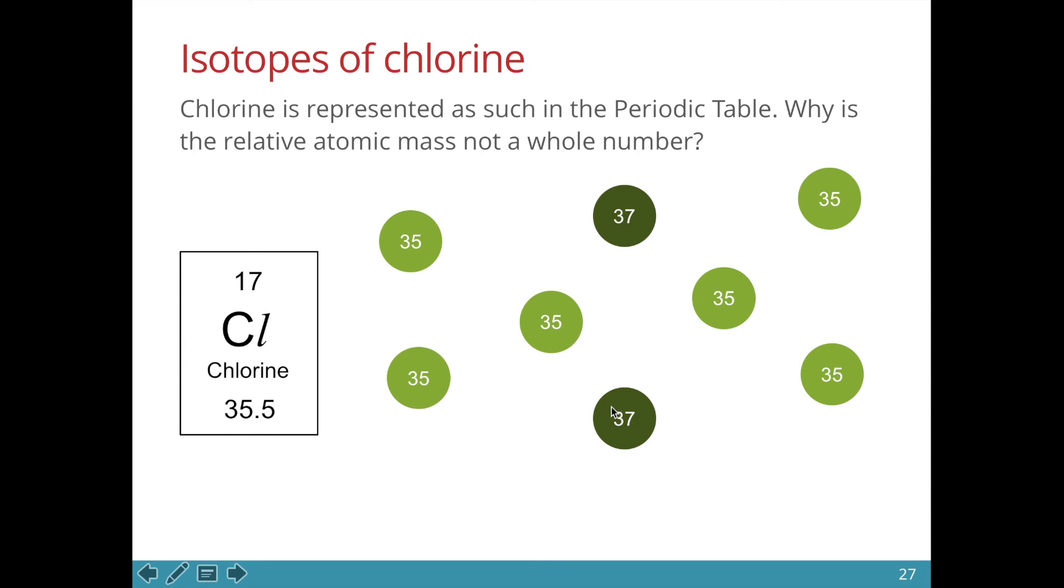With all these chlorine atoms, we take the average and we find that the average of a chlorine atom would be 35.5. How we work this out is 75% of them have a mass of 35 and 25% of them have a mass of 37 units.